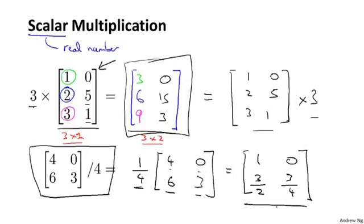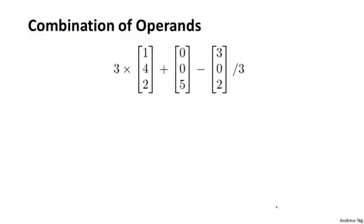Finally, for a slightly more complicated example, you can also take these operations and combine them together. So in this calculation, I have 3 times a vector plus a vector minus another vector divided by 3.